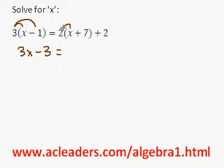2 times x. Now I'm going to distribute these guys also. 2 times x is 2x. 2 times 7 is 14. And the plus 2 remains here.